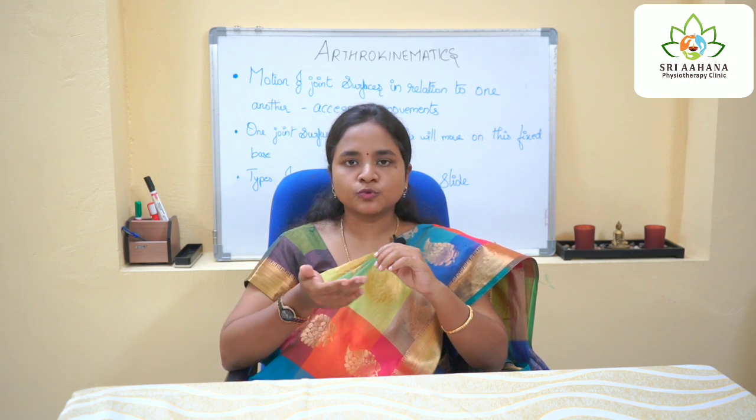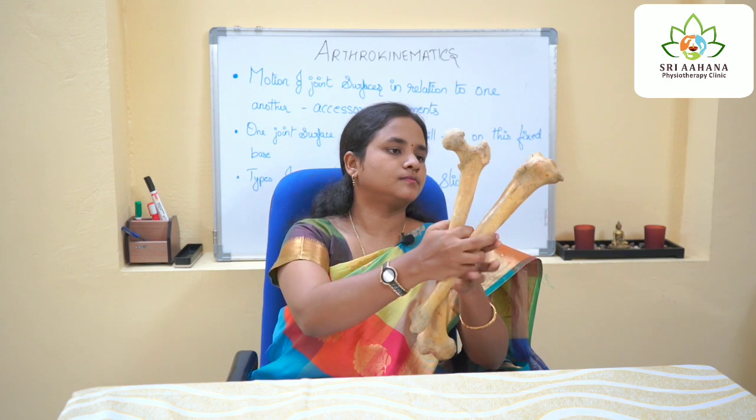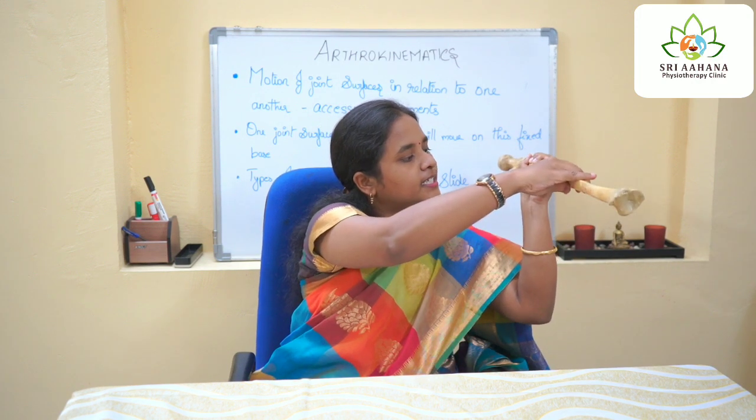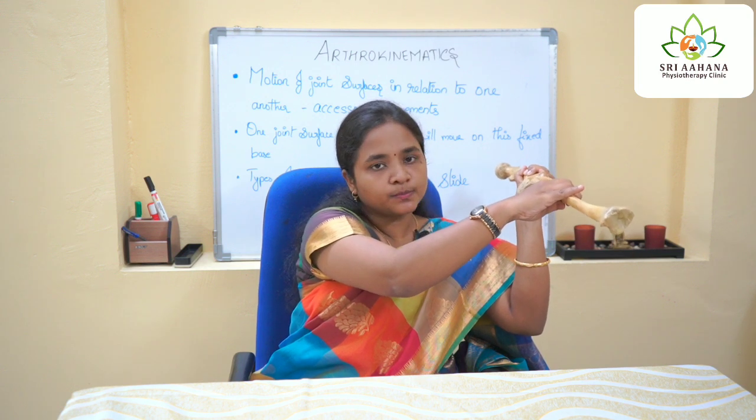The next possibility of the concave-convex rule is the convex surface being stable and the concave surface being movable. This happens when you sit and try to extend your knee. When you sit, the bones are positioned so that when you extend your knee, sliding occurs in the same direction as that of the bony lever. This maintains maximum integrity of the joints.